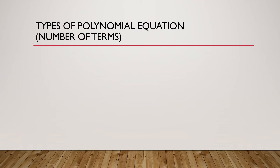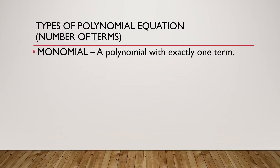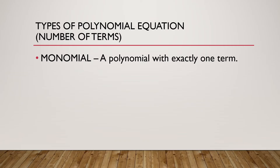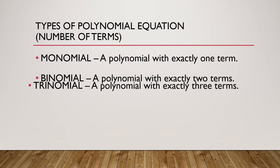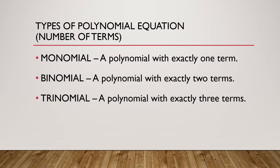There are also types of polynomial equations based on the number of terms. We have a monomial, which is a polynomial with exactly one term. A binomial is a polynomial with exactly two terms. A trinomial is a polynomial with exactly three terms.